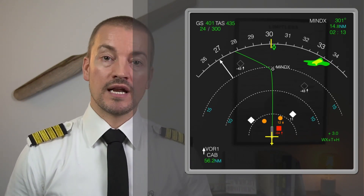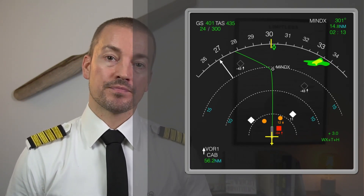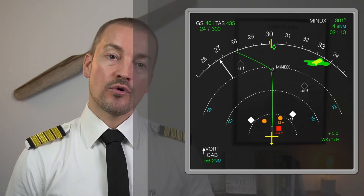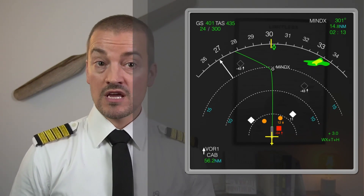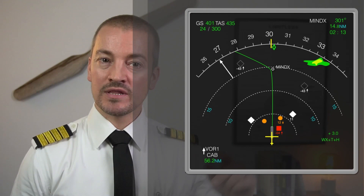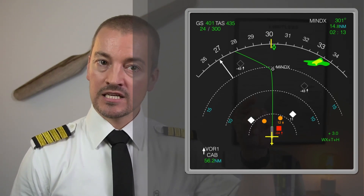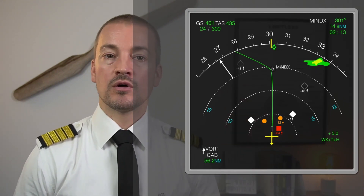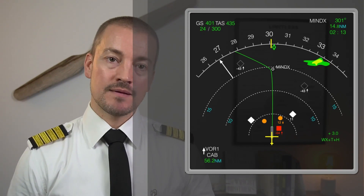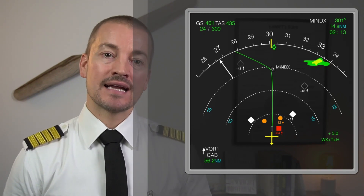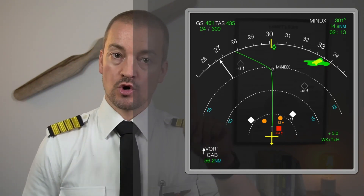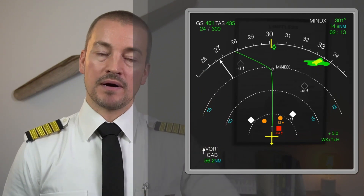There is no collision threat at all. They are each 4,300 feet below, indicated by the minus 43 below the symbol, and they are both climbing at a minimum of 500 feet per minute, shown by the up arrow.